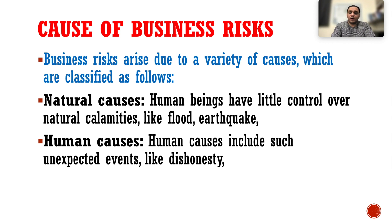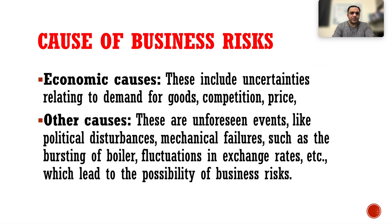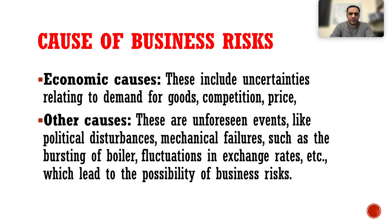Natural causes: human beings have little control over natural calamities like floods and earthquakes — any such event can result in a loss. Human causes include unexpected events like dishonesty — if any partner is dishonest, the entire business may fail. Economic causes include uncertainties related to demand for goods, competition, or prices. Other causes are unforeseen events like political disturbances, mechanical failures such as a boiler bursting, or fluctuations in exchange rates — all of which can lead to business risk.